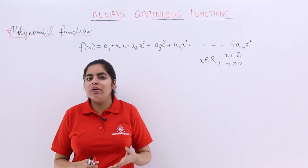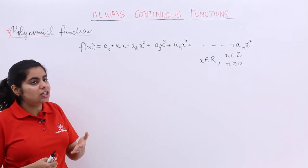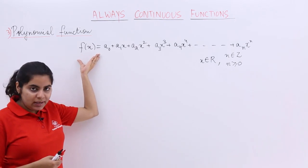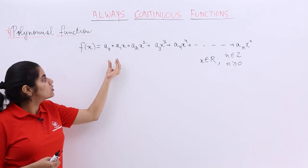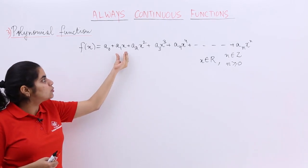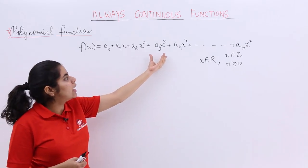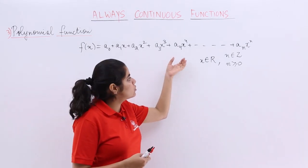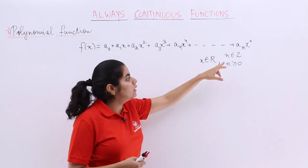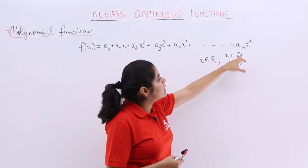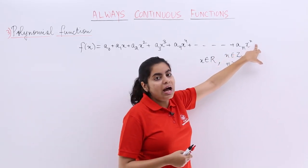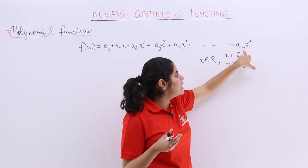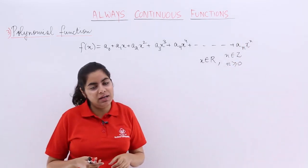For proving purposes, let's take into consideration a general polynomial. This is the general polynomial f(x), which has the expansion: a₀ plus a₁x plus a₂x² plus a₃x³ plus a₄x⁴ and so on. The highest power, or highest exponent, or the degree is n. So the last term is aₙx raised to the power n.